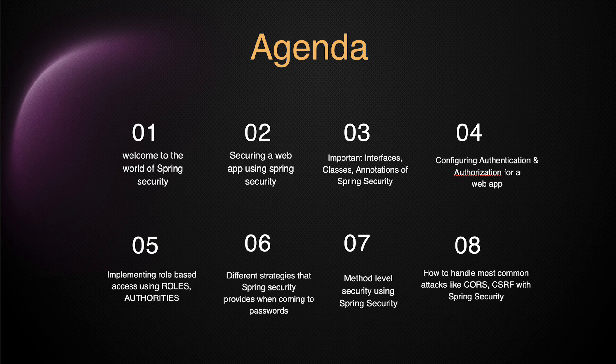In section six, we will talk about different login strategies — when someone is trying to log in, there are different ways to handle their password and login mechanism. Sections five and seven are interrelated — we again talk about method-level security in Spring Security, how to configure it, how to read the role, and based on the role throw a message to the user about whether a particular action is allowed or not.